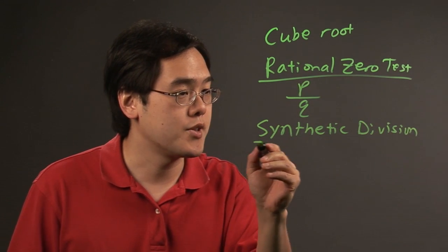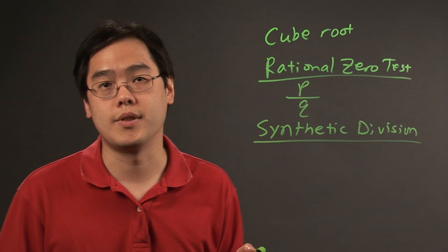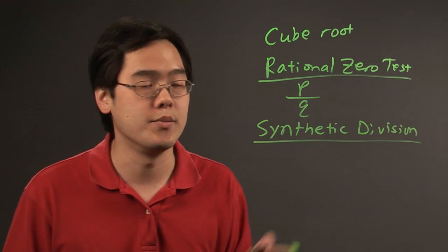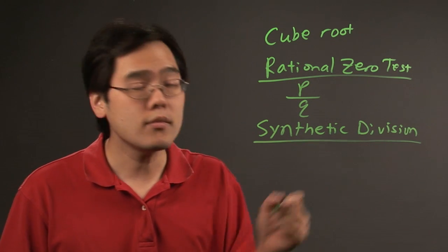Now, by now, you should know how synthetic division works. You basically put the number in the box and then you write the polynomial in descending order form.